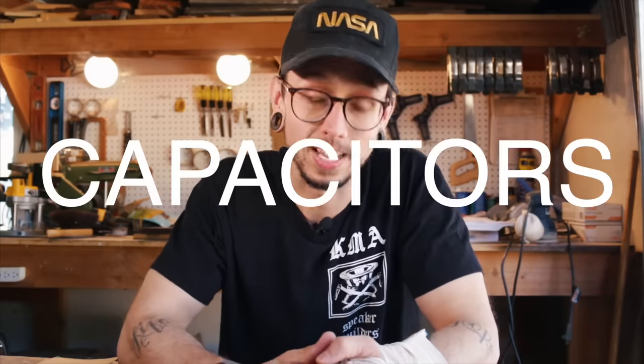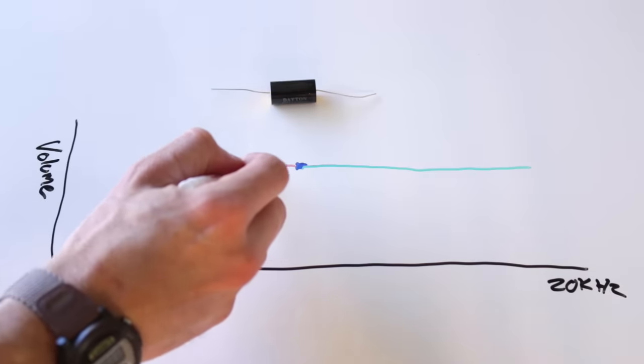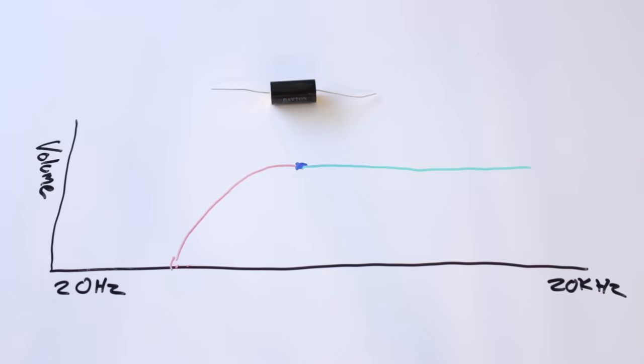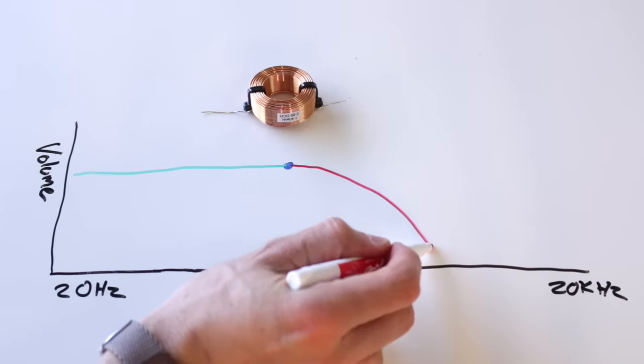Resistors lower the amplitude or volume equally across the frequency spectrum. So if your tweeter is too loud, you put a resistor on it to lower its overall volume. Capacitors have the ability to lower the amplitude of a frequency spectrum in relation to a given frequency point. In a high-pass filter, any frequency above a given point passes through the capacitor as if it wasn't there, but the volume of frequencies below that point begin to decrease as frequencies get lower. Capacitors' impedance increases as frequency decreases. Inductors are essentially the inverse of a capacitor. In low-pass filters, inductors let any frequency below a given point pass through as if it wasn't there, and begin to lower the volume of frequencies above that point. Inductors' impedance increases as frequencies increase.